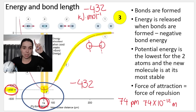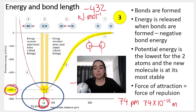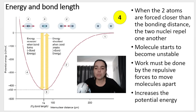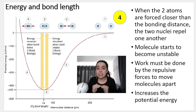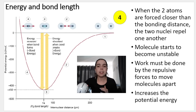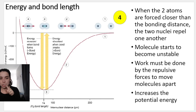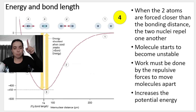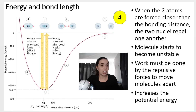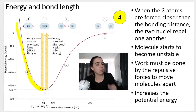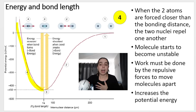Something happens at position number four: some external force pushes the atoms too close together, disrupting the stability. They were very stable with low potential energy, then something pushed them too close together. That's when the nuclei start to repel each other. The forces of repulsion are greater than the forces of attraction. The molecule starts to become unstable, and look what happens to the potential energy - it shoots up. That's not a good thing, meaning it's unstable and no more bond is happening.